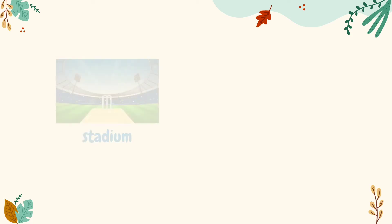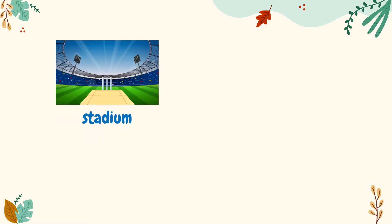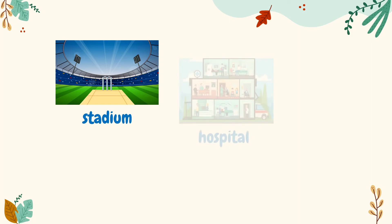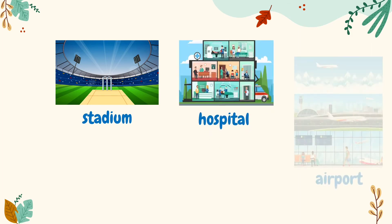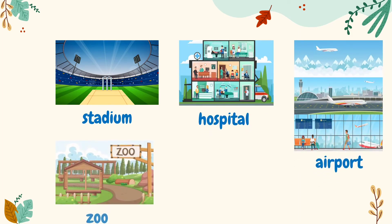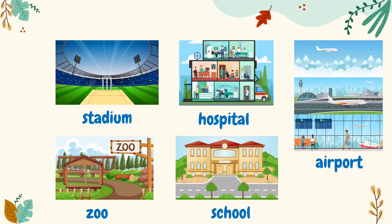Dear children, where do you go to watch a cricket match? Yes, you go to a stadium to watch a cricket match. Stadium is the naming word for a place. Let us see a few places: hospital, airport, zoo, school. So, a noun can be a name given to a place.